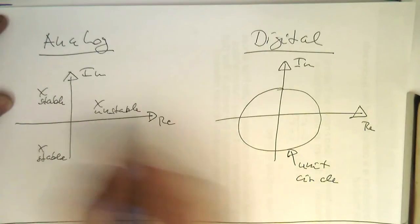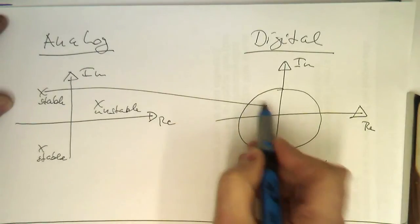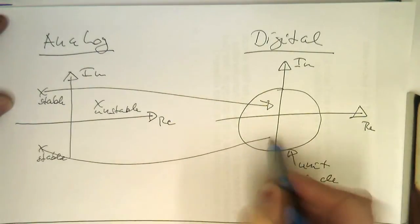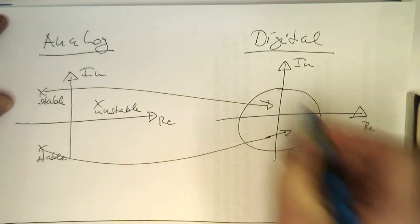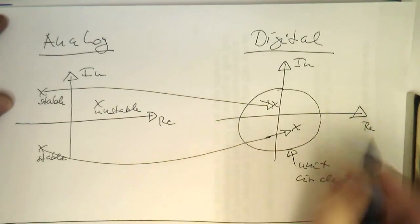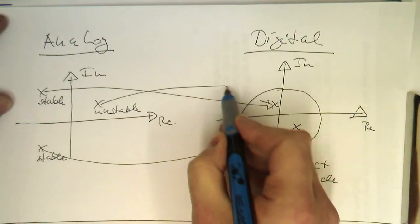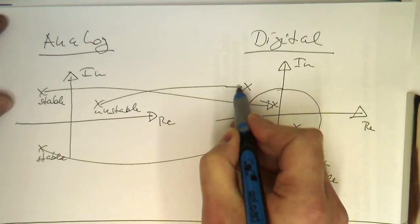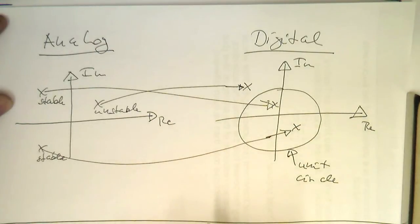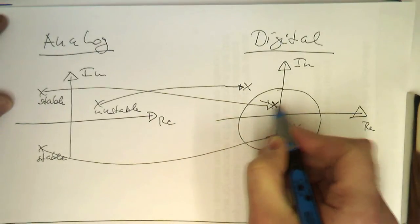These two stable poles end up inside of the unit circle. Let's say they're ending up there. And this unstable one is ending up somewhere outside of the unit circle, so somewhere here maybe.